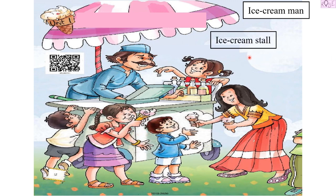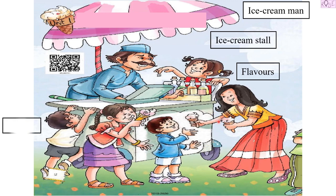The next thing I can see is an ice cream stall — a beautiful stall with a big freezer, different flavors, and a big umbrella. There are different flavors, and all the children are enjoying these flavors.